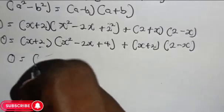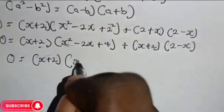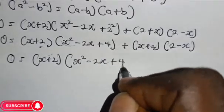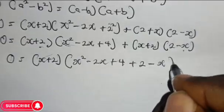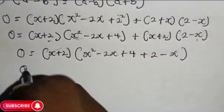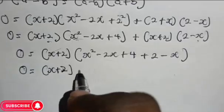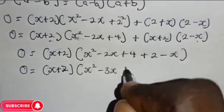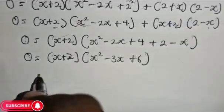So we have 0 equals s plus 2 in brackets. Inside we are going to be left with s squared minus 2s plus 4 plus 2 minus x. Simplifying, we have 0 equals s plus 2 in brackets multiplied by s squared minus 3s plus 6, close brackets.